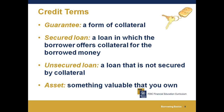In a secured loan, the borrower offers collateral for the borrowed money. If it's not paid back, the lender will take back the collateral or whatever property was put up against the loan. An unsecured loan is not secured by collateral — it may be based on your credit report and good faith, sometimes called a signature loan. An asset is something valuable that you own.